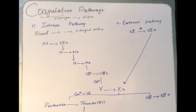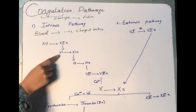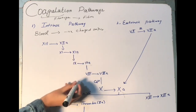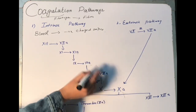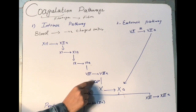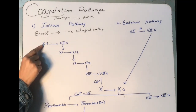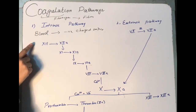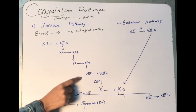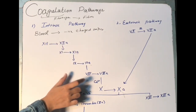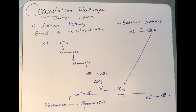Factor 12 becomes active, forming factor 12a. Factor 12a leads to activation of factor 11a, which leads to activation of factor 9, then factor 8, and ultimately this leads to activation of factor 10. Factor 10 is converted into factor 10a, its active form, and calcium is needed here. So the intrinsic pathway initiates with factor 12 and leads to activation of various clotting factors, ultimately resulting in factor 10a activation.